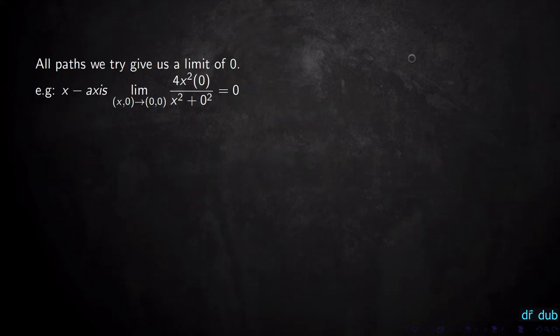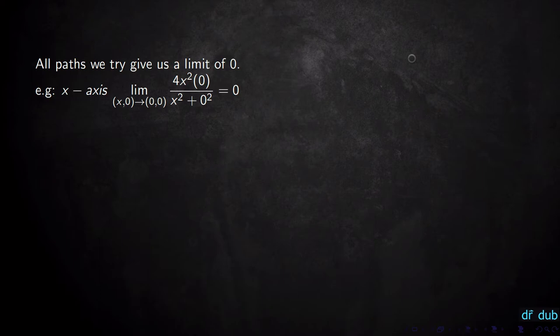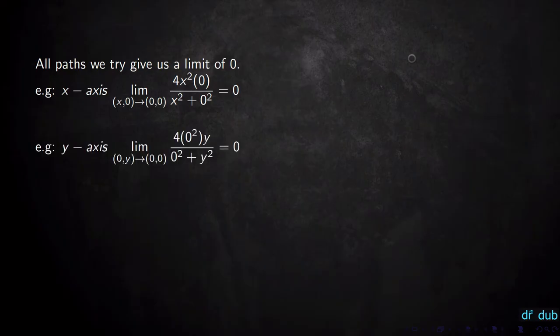We'll start by applying the approach where we try to disprove the limit exists by taking different paths to the point. This limit is going to the origin. Taking the first path — the x-axis, y equals zero — if we plug in y equals zero, we get a limit of zero. Trying the y-axis, plugging in x equals zero, we get a limit of zero again.